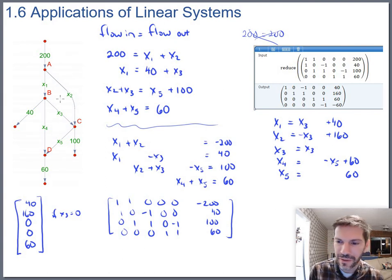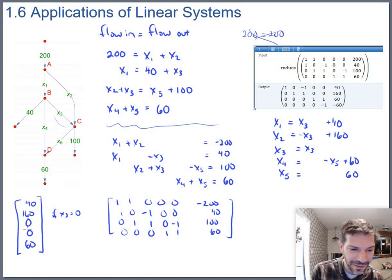I could pick any number for x3 between zero and 160 and get a solution that would balance this network. Let's just make sure that this actually seems like it's working. Let's say if x1 is 40, so we've got 40 flowing into b, and there's 40 flowing out of b right there, which means x3 had better be, there's nothing left to flow out x3, so x3 better be zero, which it is.